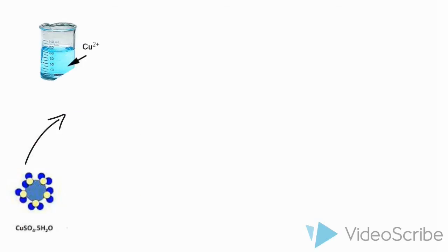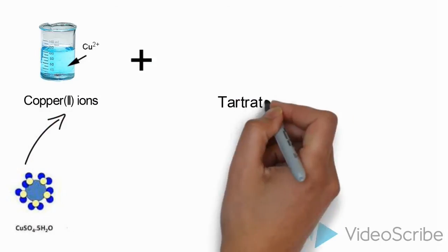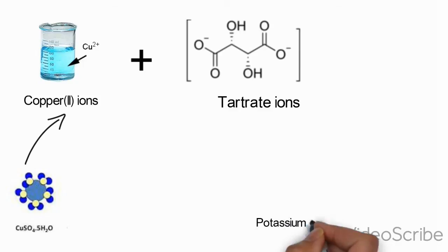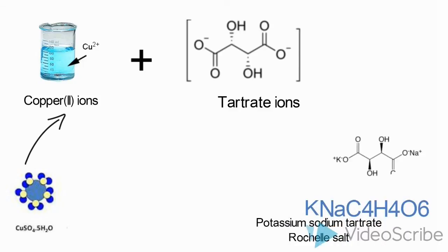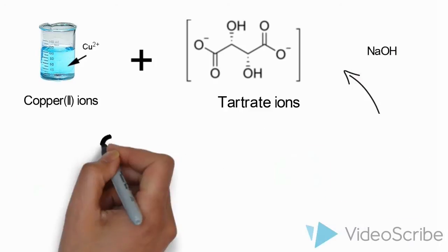Copper 2 ions from aqueous solution of copper 2 sulfate pentahydrate are mixed with tartrate ions from Rochelle salt under the alkaline conditions produced by the sodium hydroxide presence.